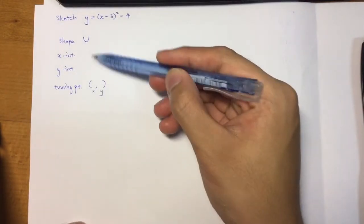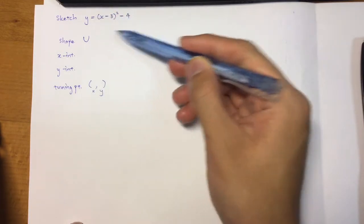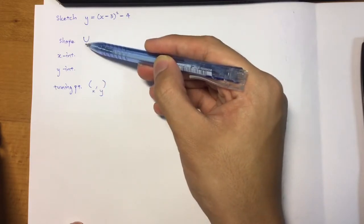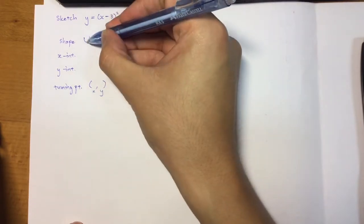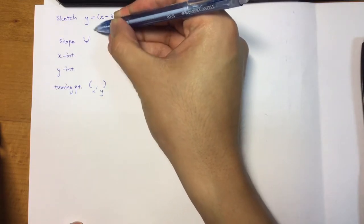So which of these do we want to find first? Actually, the easiest thing to find is the turning point. So if it's a U shape, we will know that it's going to be a minimum point, a smallest value of y.